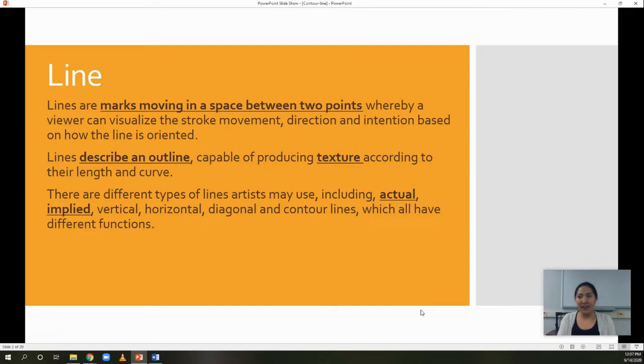We have vertical, horizontal, diagonal lines that we are all used to from the perspective drawing unit. We also have contour line where we are going to focus on the outer edge in this unit. And they all have different functions, of course.